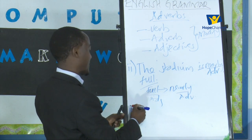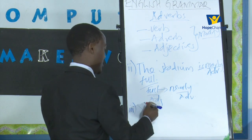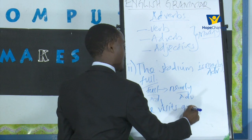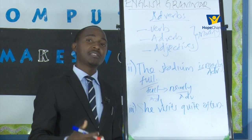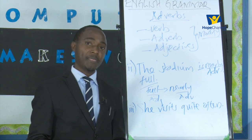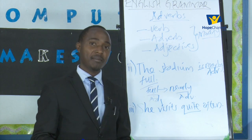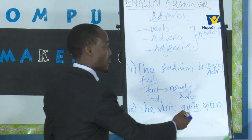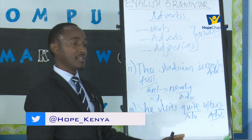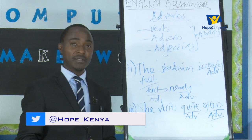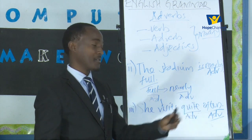In another sentence showing how an adverb can modify another adverb: 'she visits quite often.' We could simply say she visits often — meaning she frequently visits. But when we say she visits quite often, the word 'quite' is our adverb, still modifying the word 'often.' The adverb 'quite' modifies another adverb, which is 'often.'